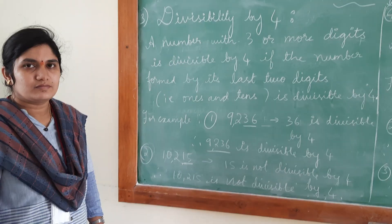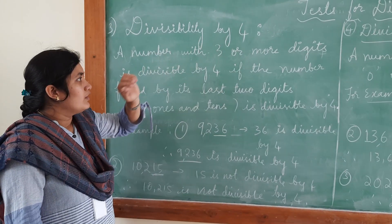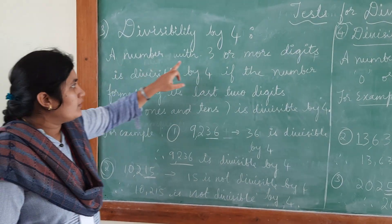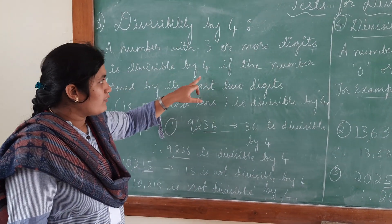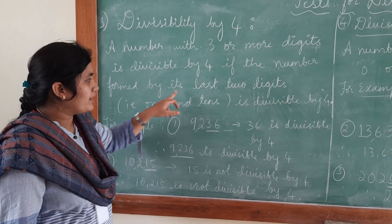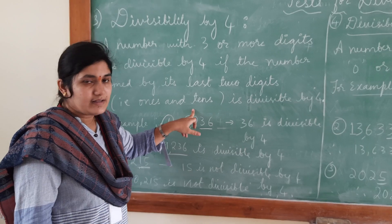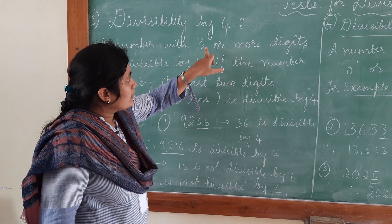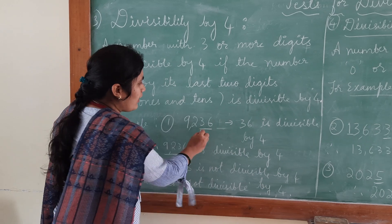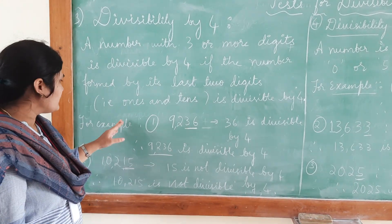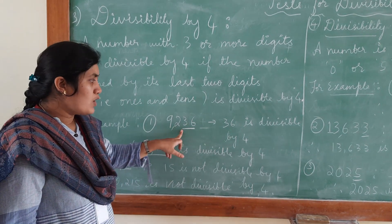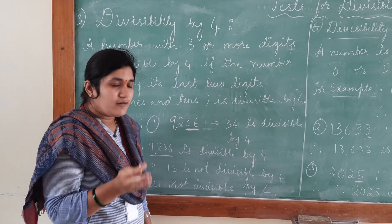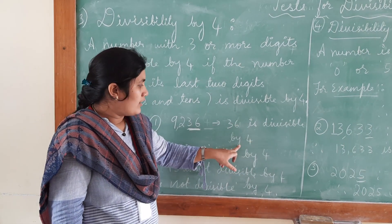Now let us start divisibility by 4. A number with 3 or more digits is divisible by 4 if the number formed by its last 2 digits — that is, the 1's and 10's place — is divisible by 4. Let us see the first example: 9,236. The last 2 digits are 36. 36 is divisible by 4, meaning 36 is a multiple of 4 and 4 is a factor of 36. We get 36 in the 4 times table.